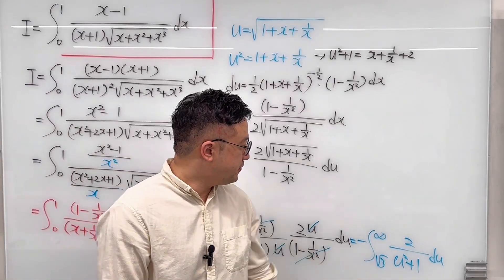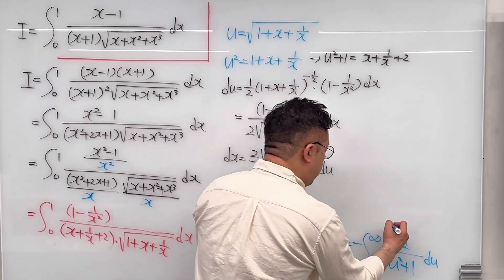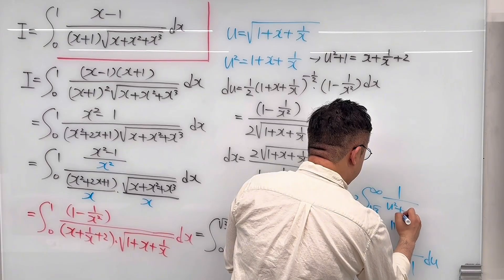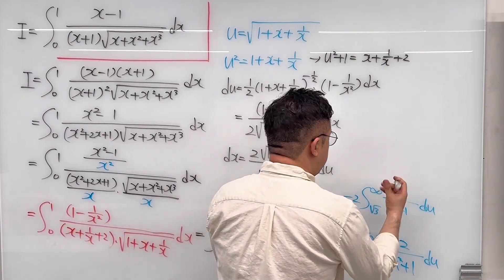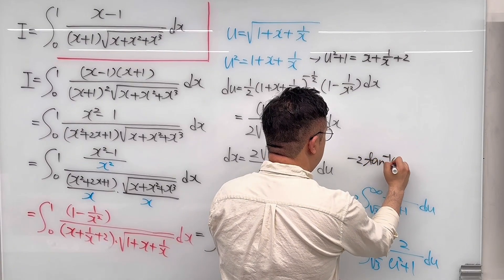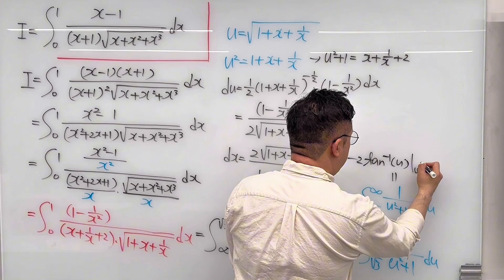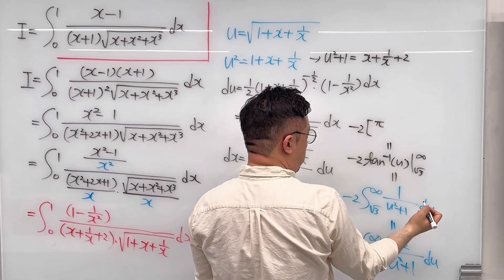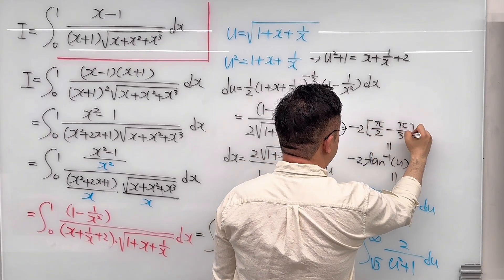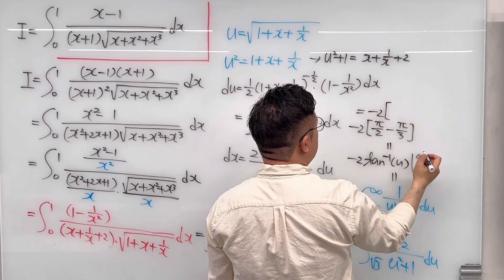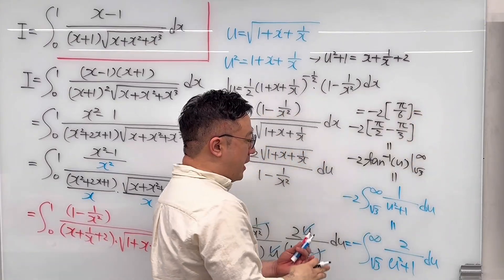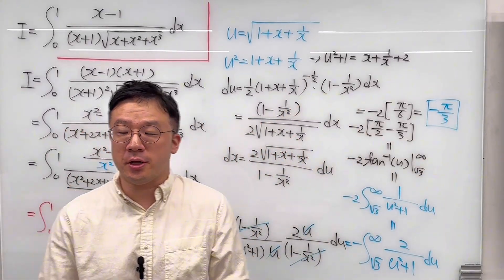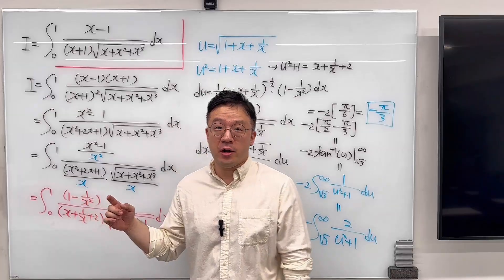So we can talk about arctangent. Pulling out the 2, we get negative 2 times the integral from square root of 3 to infinity of 1 over (u squared plus 1), du. This equals negative 2 times arctangent(u) evaluated from square root of 3 to infinity, which equals negative 2 times (pi over 2 minus pi over 3), which equals negative 2 times pi over 6. So the final answer for this question is negative pi over 3. It's a pretty interesting integral involving arctangent — how amazing.